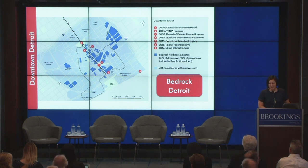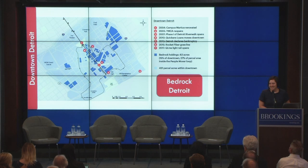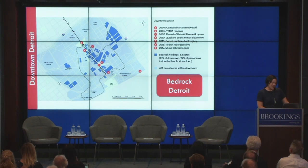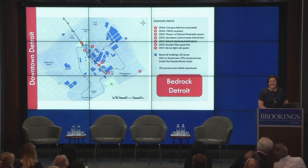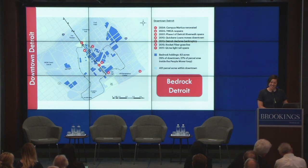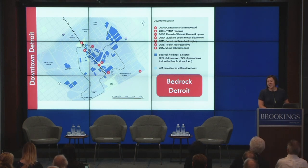We're going to hear from the Downtown Detroit Partnership that manages Campus Martius, which is right in the center of what's been happening in downtown Detroit. We'll hear about the extraordinary investment of Rock Ventures — the parent company of Quicken Loans owned by Dan Gilbert — which now owns 27% of the parcel area inside the people mover loop, and 25% of the people who work in downtown Detroit call Dan Gilbert their boss.